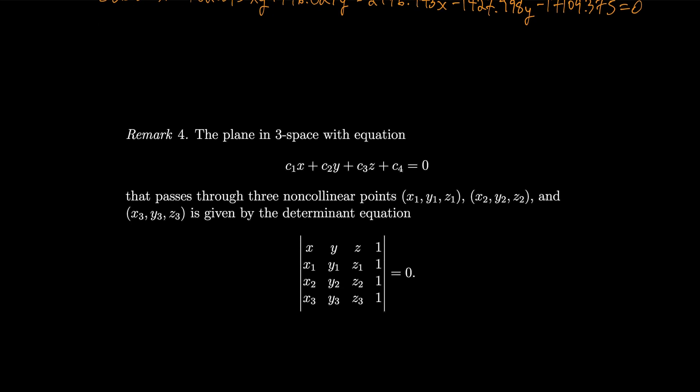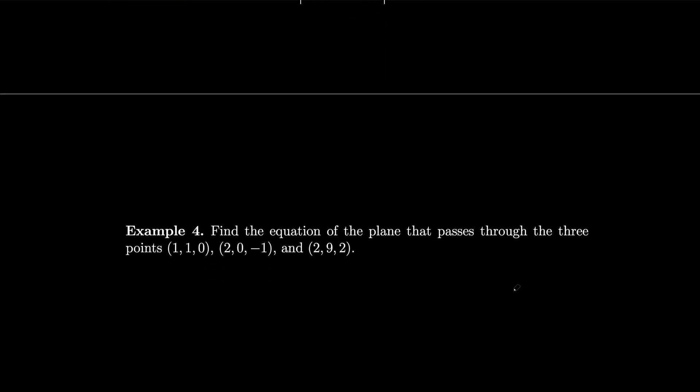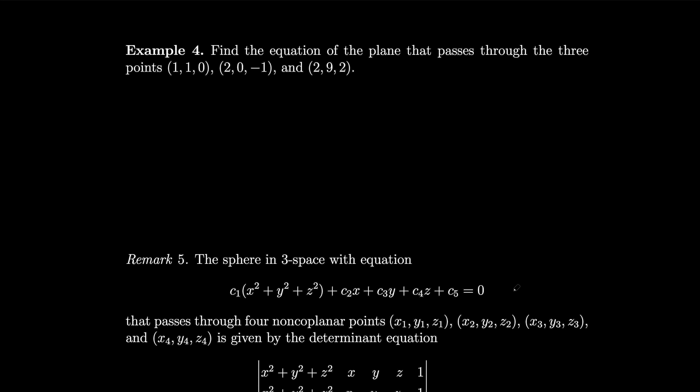The plane in three space with equation given over here, notice now we have a z variable that passes through three non-collinear points in three space, so now we have z's, is given by a determinant equation that has a z in it. Okay, cool. So we can use that to find the equation of the plane that passes through the three points given over here.